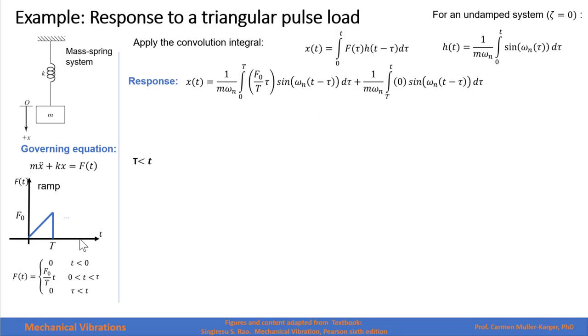Now for times greater than capital T, the ramp already happened. We have a response to that perturbation, but we don't have a function. So we'd have to divide our integral between 0 and capital T, where we have the ramp, and then from capital T to a generic time, where our function is equal to 0.